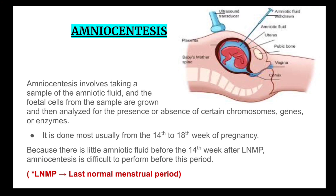Amniocentesis involves taking a sample of the amniotic fluid; fetal cells from the sample are grown and then analyzed for the presence or absence of certain chromosomes, genes or enzymes. It is usually performed from the 14th to 18th week of pregnancy, because there is little amniotic fluid before the 14th week after LNMP, making amniocentesis difficult to perform before this period.